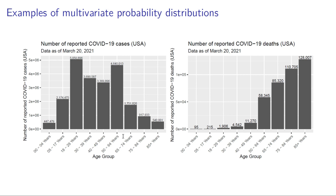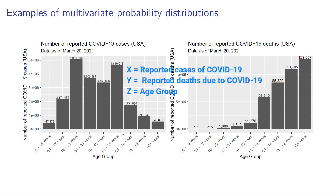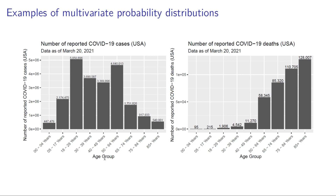So here in this view I have three variables: variable X — cases of COVID-19, variable Y — deaths due to COVID-19 in the US, and variable Z — age group. Looking at three variables together gives you a much more interesting view than just looking at one variable on its own.